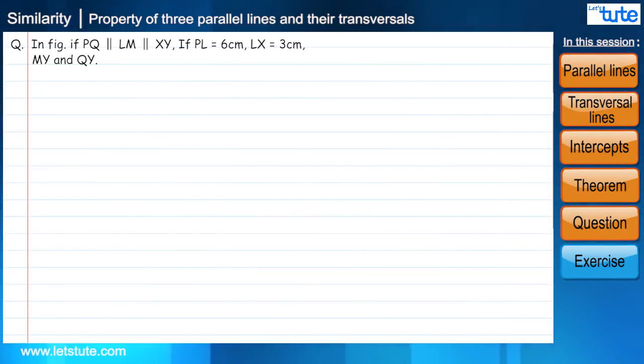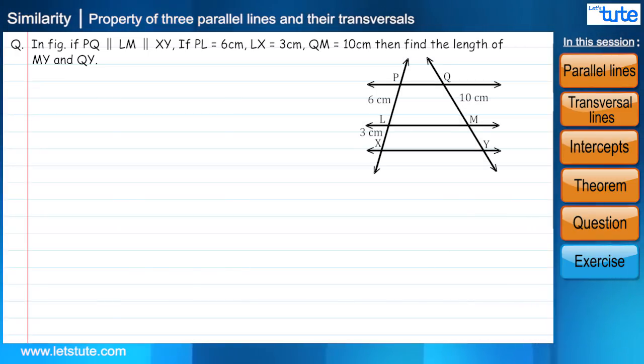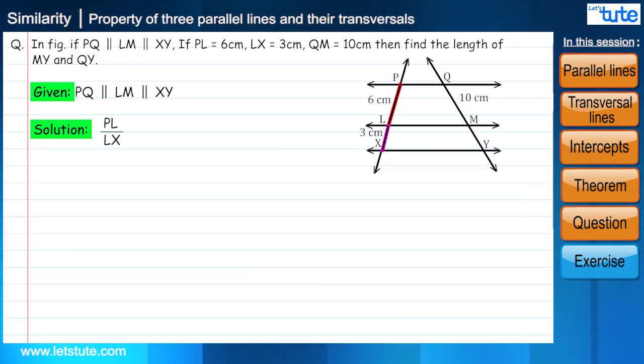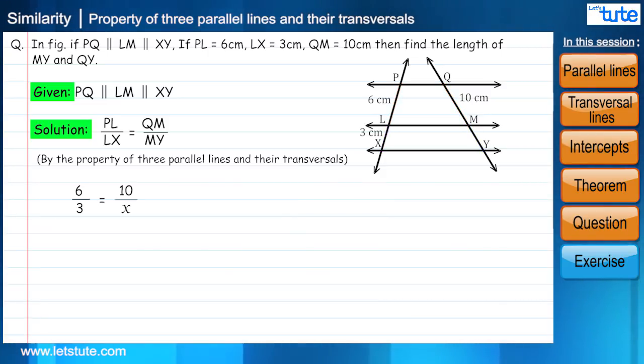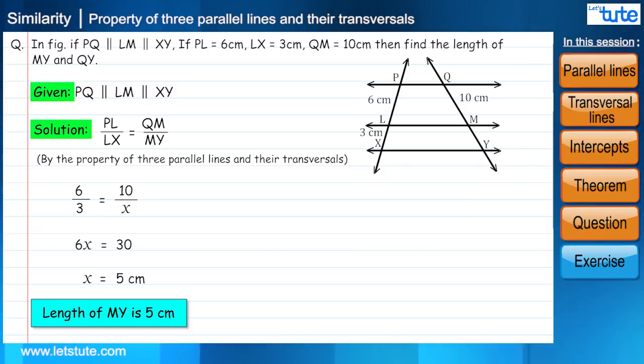Let us solve one example based on the theorem. In the figure, if PQ is parallel to LM is parallel to XY, and if PL equal to 6 cm, LX equal to 3 cm, QM equal to 10 cm, then find the length of MY and QY. Here it is given, therefore PL divided by LX equal to QM divided by MY. On solving this, we will get X equal to 5 cm. That is, length of MY is 5 cm.